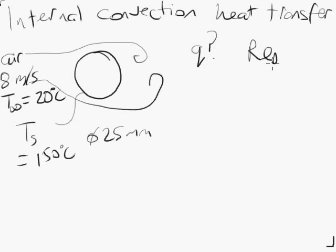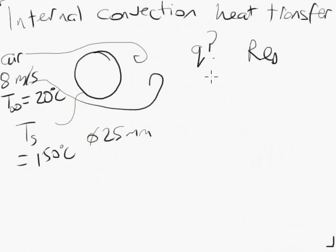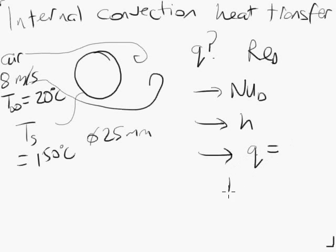You would work out the Reynolds number, then you would go to a set of tables like this one here. You choose one of these correlations for a cylinder, maybe this one. You would find the Nusselt number, you'd find the heat transfer coefficient, and you'd find the heat transfer rate, which would be H A T infinity minus T S, where A is the surface area of the cylinder. That's an external convection problem.